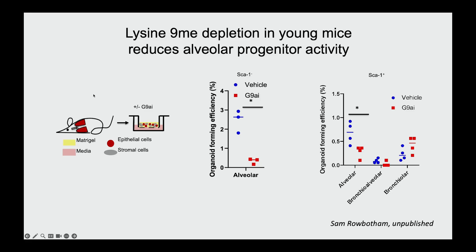In comparison, the club or bronchiolar cells also have a trend for decrease, but not as significant. We then asked, using functional assays going back to organoid cultures, whether the enzyme G9A, when inhibited in order to deplete this methylation mark, might alter the activity of these organoids. Indeed, when we took normal mice, prepared the alveolar cells for organoid culture, and added the G9A inhibitor, the cells are less able to make alveolar organoids — in fact mimicking the phenotype of the aged mouse lung cells.